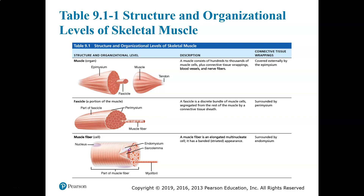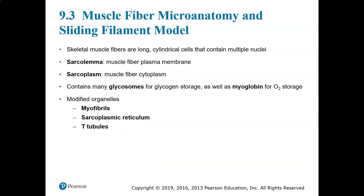This chart shows you the levels of muscle: the entire muscle, the fascicle, and the muscle fiber itself. A muscle fiber, or muscle cell, is long and cylindrical and multi-nucleate — it contains many nuclei. It is actually a fusion of many, many cells.